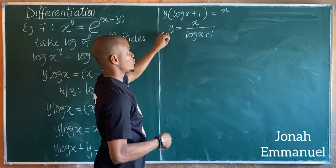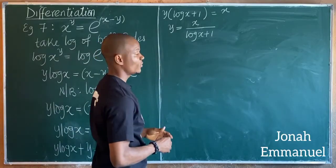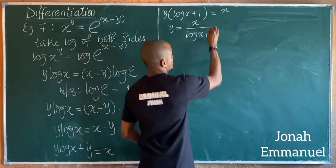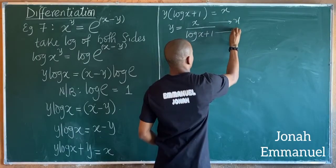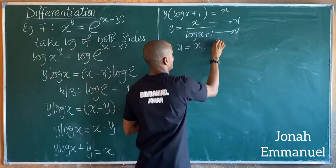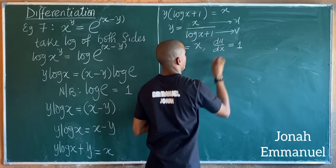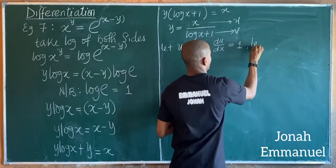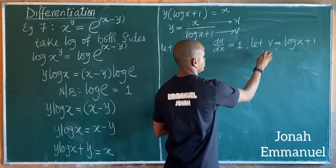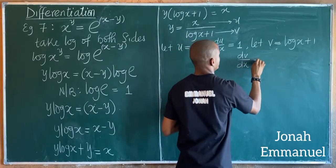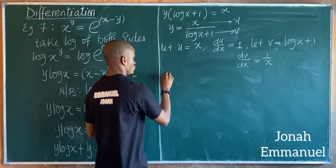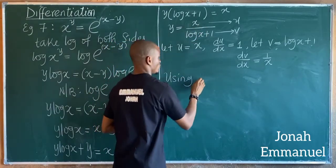Now we differentiate y equals x over (log x + 1) using the quotient rule. Let u equal x, so du/dx equals one. Let v equal log x plus 1, so dv/dx equals one over x (the derivative of the constant 1 is zero).